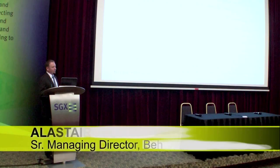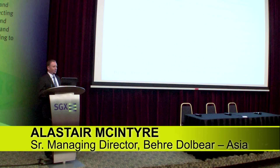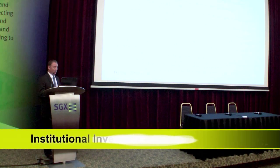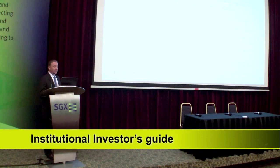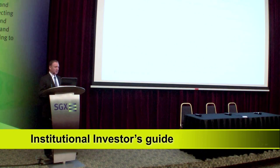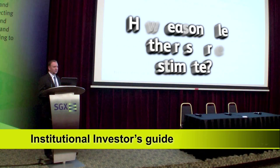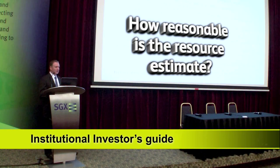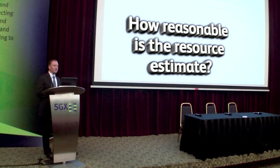From the geology and the resource estimate, what to look for: not just whether it's a JORC resource, but whether it's compliant and in what category, and is there upside? Not every project that comes in has a JORC resource estimate. Many projects we see in China are done under Chinese resource estimates. But you need to determine how reasonable that resource estimate is, how has it been estimated, and what's the likelihood of being able to convert it?